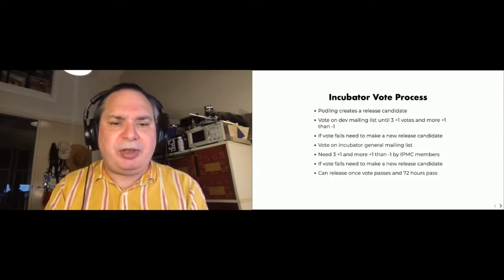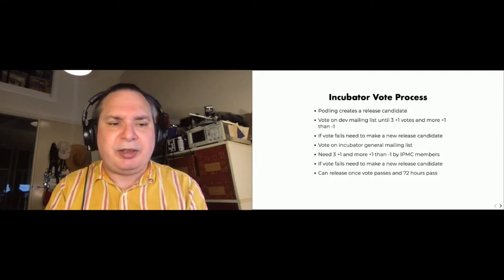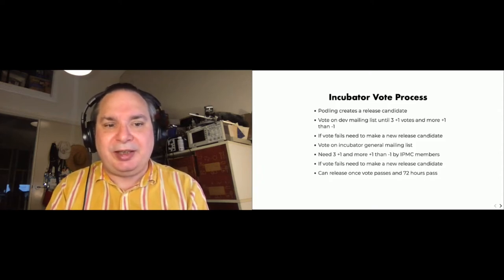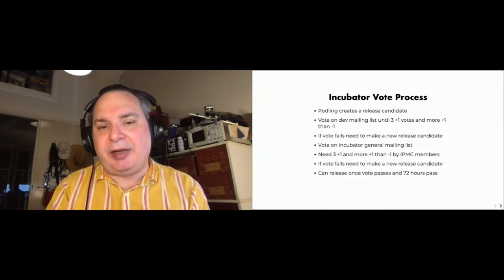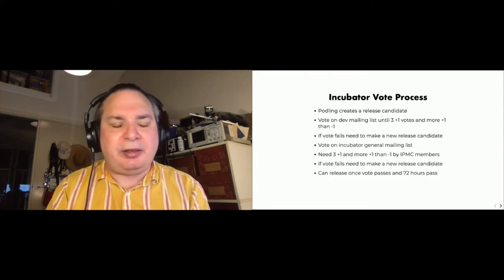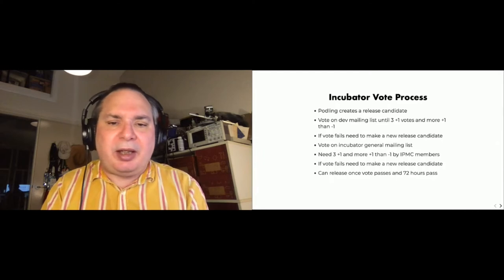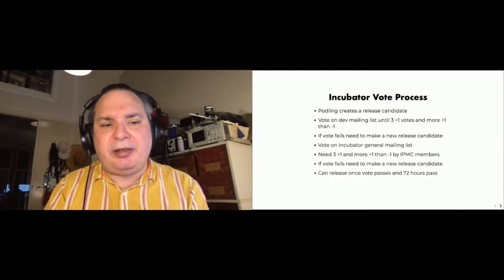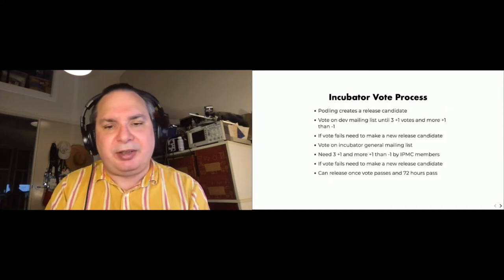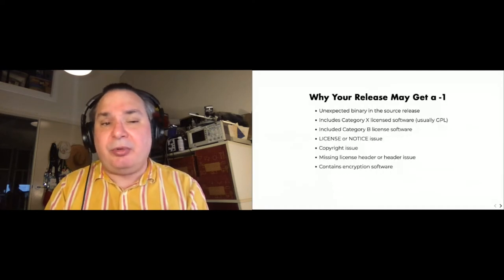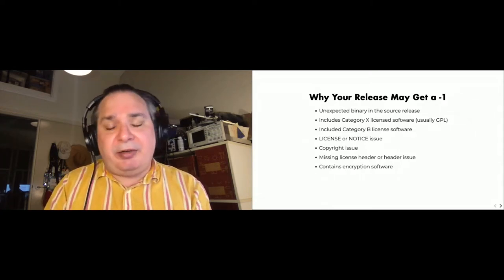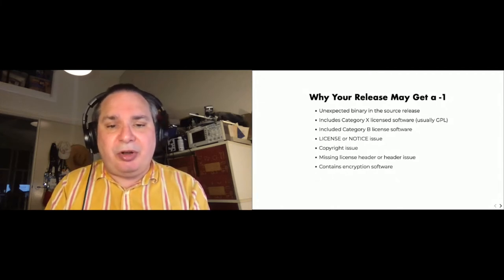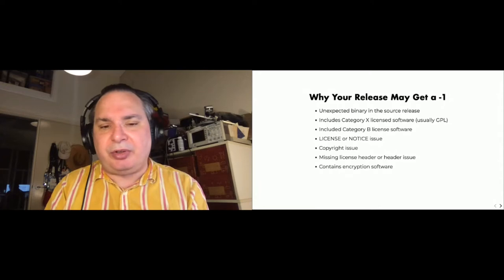Why might you get a minus-one vote on your release? There are a few common issues. Generally, things like unexpected binaries in a source release — we are making open source software, so you shouldn't have compiled code in there. We also have license categories — A, B, and X — and if you include something from category X, such as under a GPL license, that's not compatible with the Apache license. The source release also can't include anything from category B. Those are probably the most common issues.